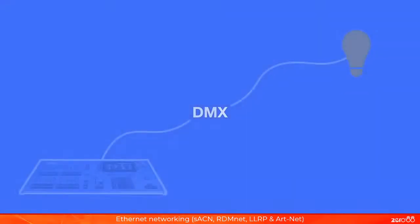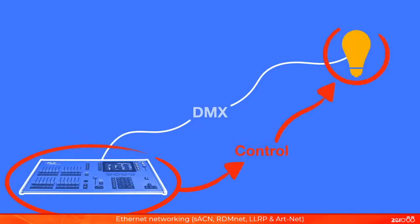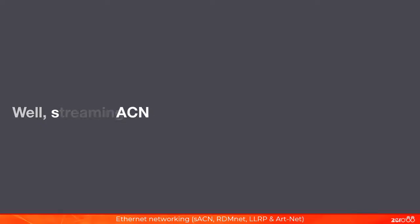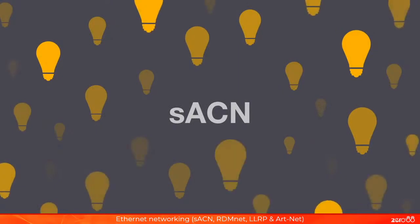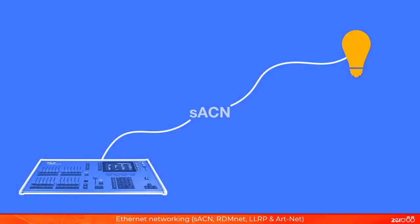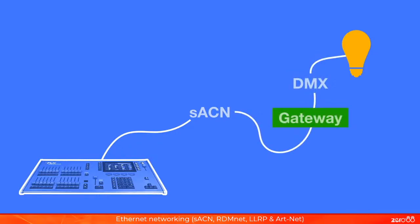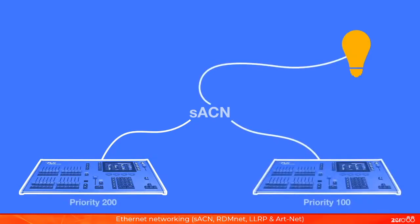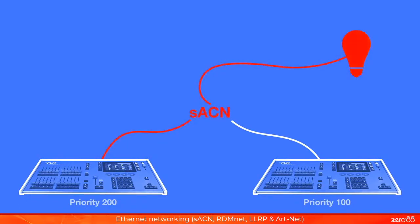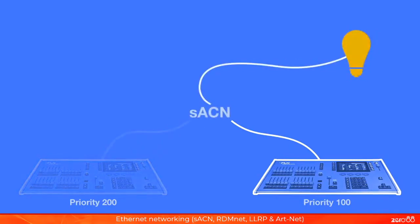You're probably familiar with DMX — it's the bit of cable connecting the lighting rig together, allowing your console to control your lights. Streaming ACN, or SACN, is the equivalent but over Ethernet cables. The main advantage is that you can control many, many more lights through just one cable. Some lights accept SACN straight into them, whereas for others you need a gateway to convert SACN to DMX. Two lighting consoles can both output SACN at the same time with different priorities — this could be a backup console. Whichever has the highest priority controls your lights, but when turned off, the other automatically takes over.